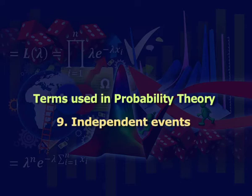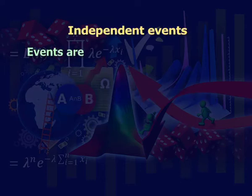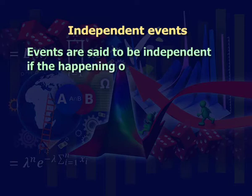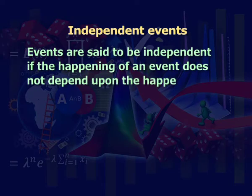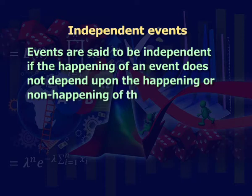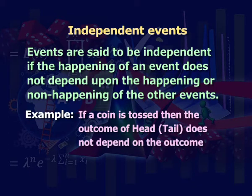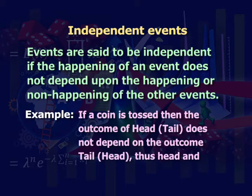Ninth: independent events. Events are said to be independent if the happening of an event does not depend upon the happening or non-happening of the other events of the experiment. For example, if a coin is tossed, then the outcome of head or tail does not depend upon the outcome of the other toss. Thus, head and tail are independent events.